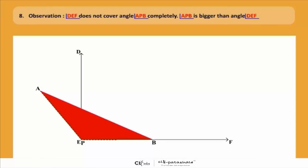Now children, after doing so much, now observe the figure very carefully. What is our observation? That angle DEF does not cover angle APB completely. Why? Because APB is bigger than angle DEF.